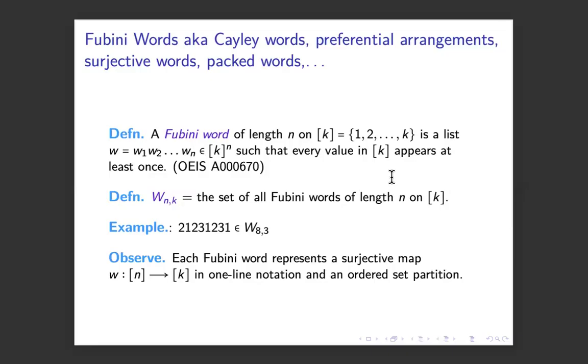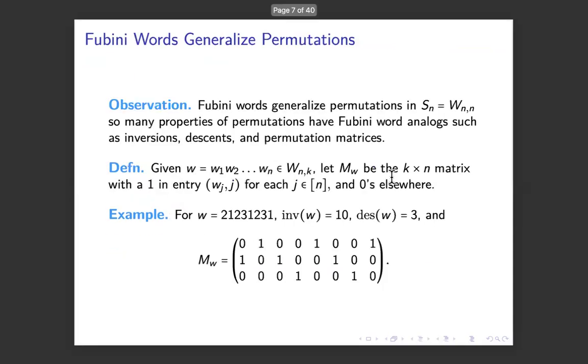I'll use the notation W_{n,k} to mean the set of all Fubini words which have n letters and the alphabet is 1 through k. For example, 2,1,2,3,1,2,3,1 is a Fubini word in W_{8,3}, but 1,1,1,3,3,3,7 would not be a Fubini word because there would be some gaps in there. Every Fubini word represents a surjective map in one-line notation. You can think of it as an ordered set partition. What is the inverse image of the number 1? That goes into the first set. What is the inverse image of 2? That goes into the second set of the partition.